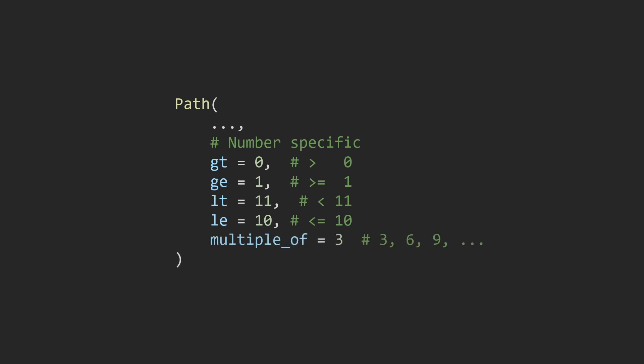The next one we can use is multiple_of, which makes sure whatever number we pass in as a path parameter is a multiple of a given number. So in this case I'm saying multiple_of 3, meaning only 3, 6, 9, and so on can be passed in.